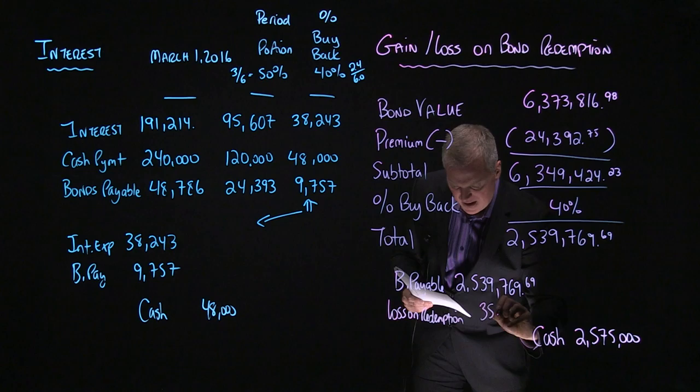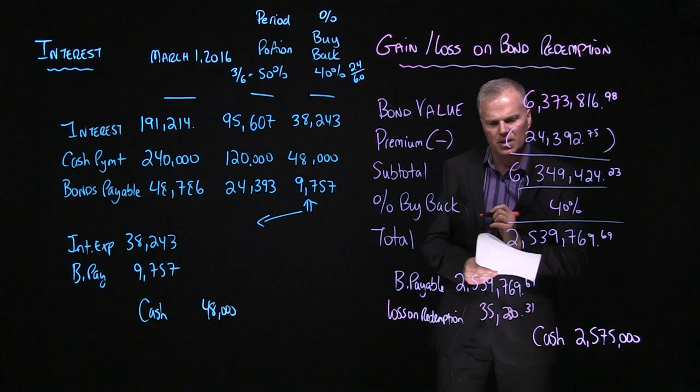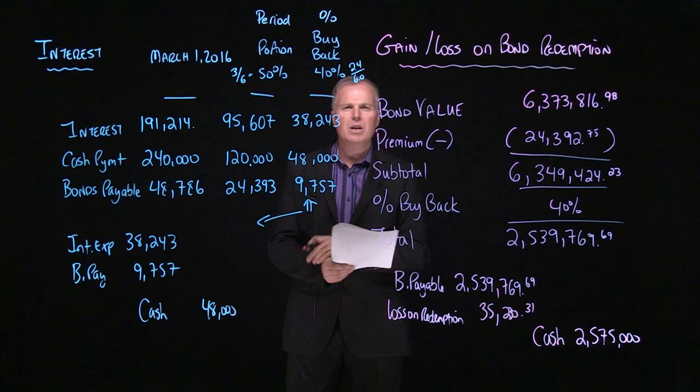So the difference between these two represents a loss on redemption. And losses are on the debit side. And that is equal to $35,230.31. And overall, that will give you now your second journal entry.